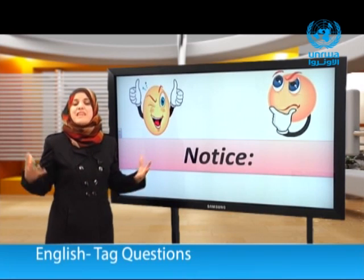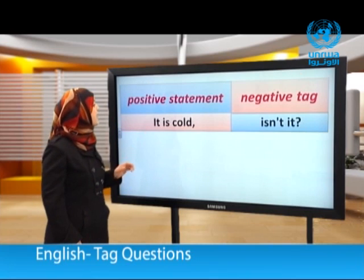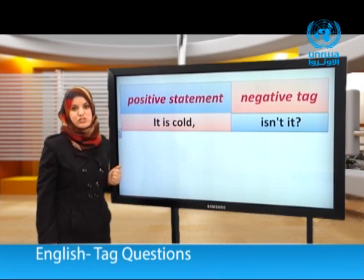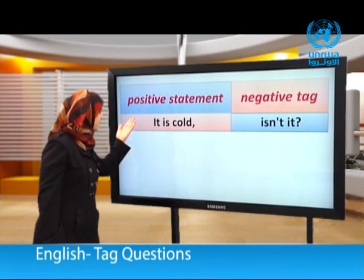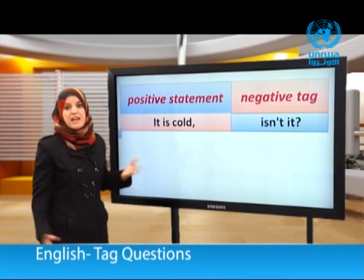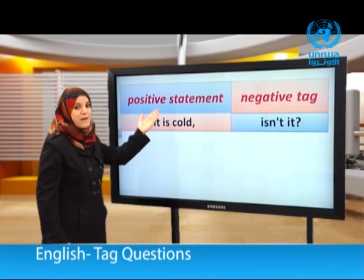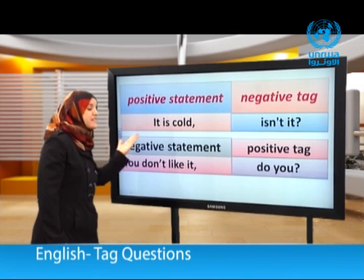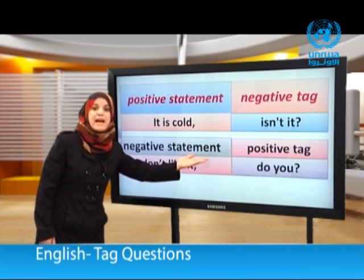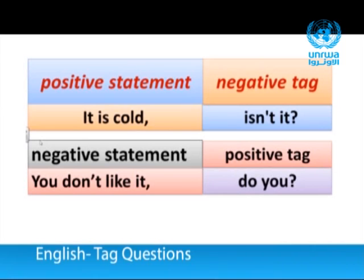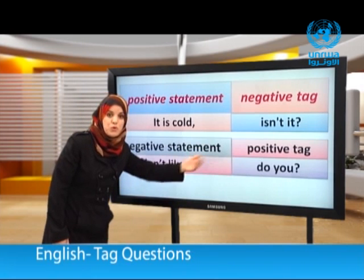From all these examples we can conclude: a positive statement is followed by a negative tag question, and a negative statement is followed by a positive tag question. For example: You don't like it — the statement is negative, and the tag question 'do you' is positive.